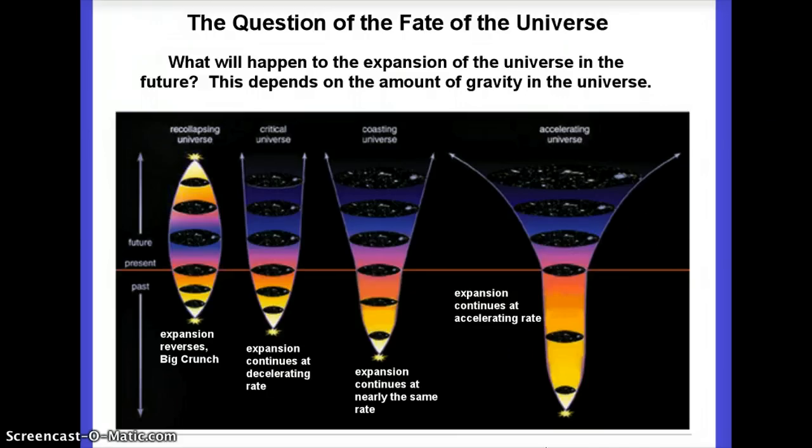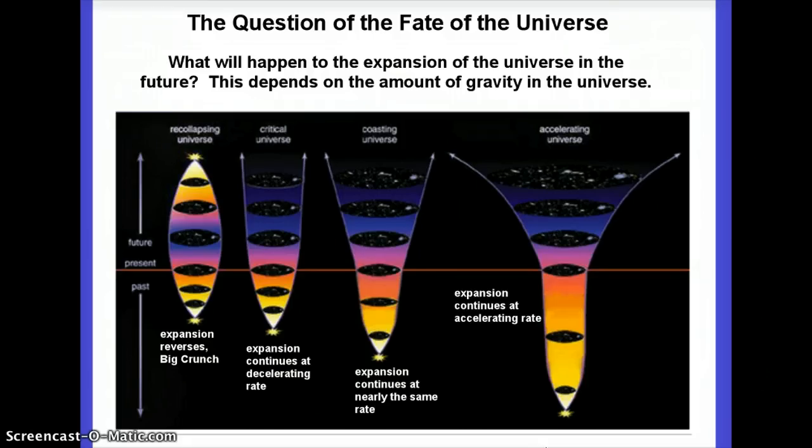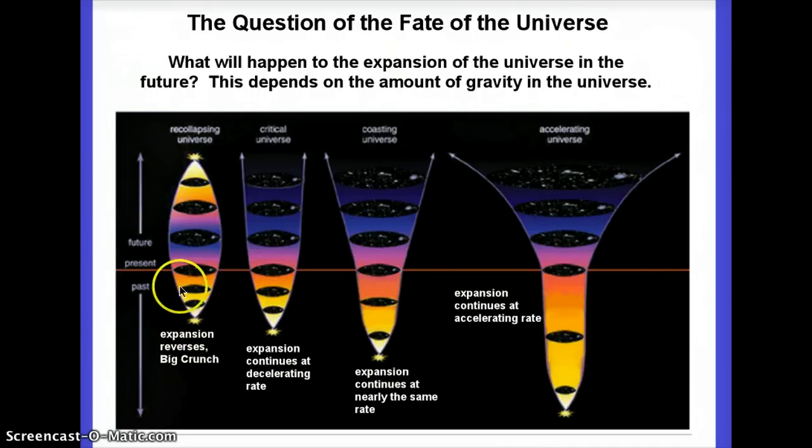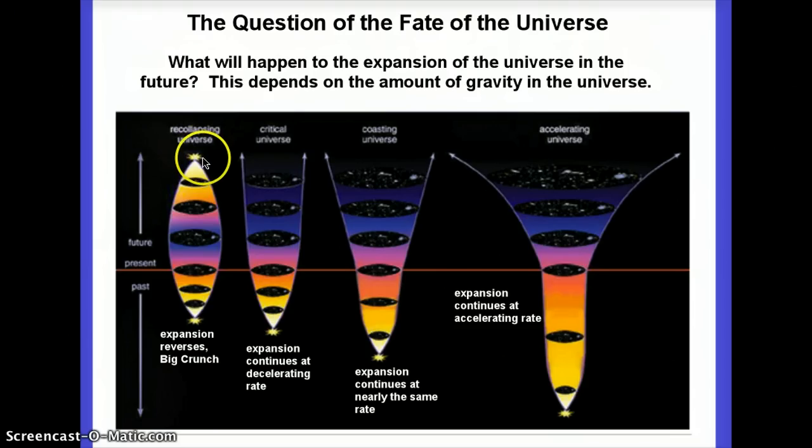So there's various scenarios that we might imagine. For instance, you might imagine that for some reason the expansion is going to turn around and the universe is going to collapse back on itself. And we end up, if we started with a big bang, maybe we end up with what you might consider a big crunch. Everything comes back together.